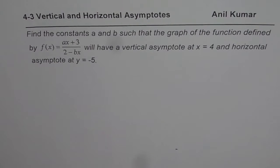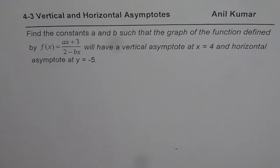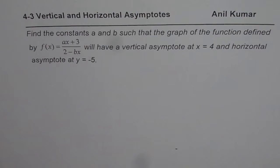I'm Anil Kumar and here is a thinking question on vertical and horizontal asymptotes. The question is: find the constants a and b such that the graph of the function defined by f(x) equals ax plus 3 divided by 2 minus bx will have a vertical asymptote at x equals 4 and a horizontal asymptote at y equals minus 5. You can pause the video, answer the question, and then look into my suggestions.